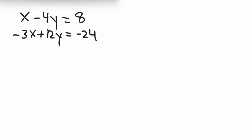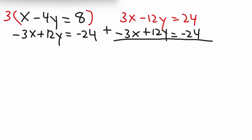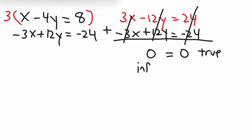Here's another problem. I'll eliminate x on this one. Multiplying the first equation by 3: 3 times x is 3x, 3 times negative 4y is negative 12y, and 3 times 8 is 24. Adding this to the second equation, everything cancels out — that cancels, this cancels, that cancels — and we get 0 equals 0. This is a true statement, so your answer for this one is an infinite number of solutions.